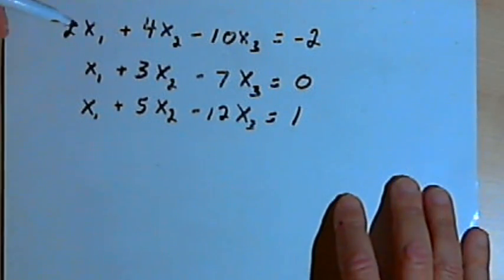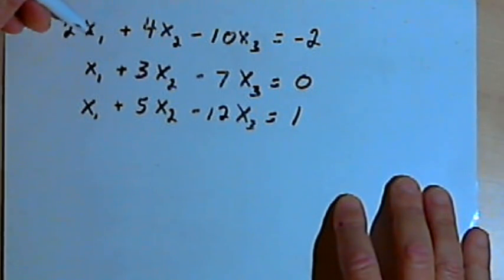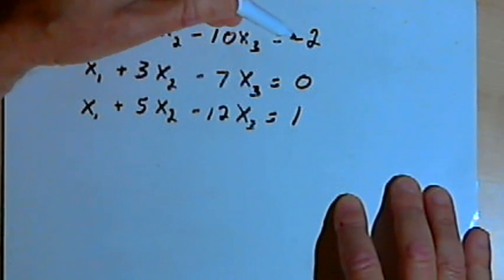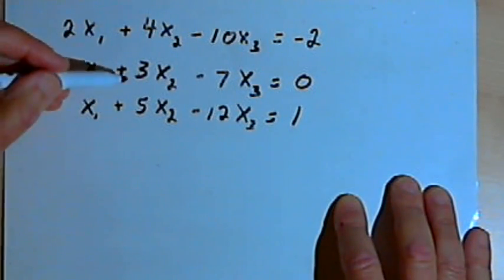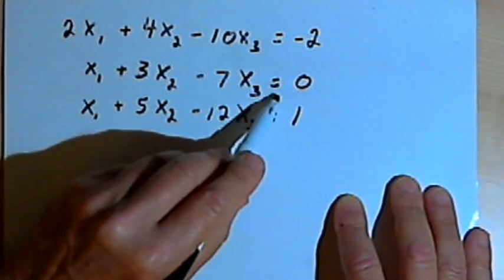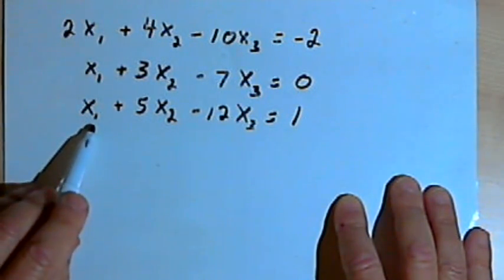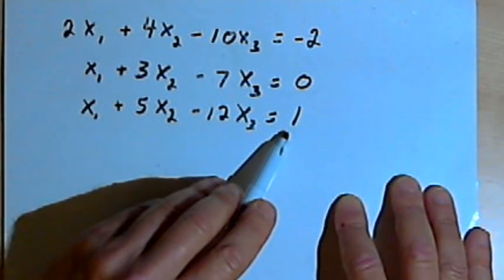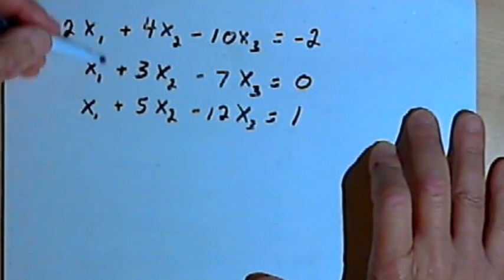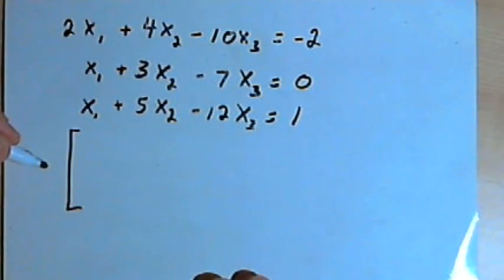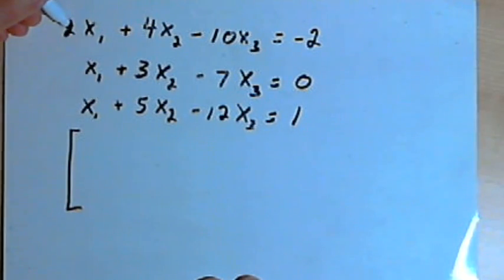Here are the three equations we'll be dealing with: 2x₁ + 4x₂ - 10x₃ = -2, then x₁ + 3x₂ - 7x₃ = 0, and x₁ + 5x₂ - 12x₃ = 1. The first step is to take that information and use it to make a 3 by 4 augmented matrix, using the coefficients and the constants to fill in that matrix.